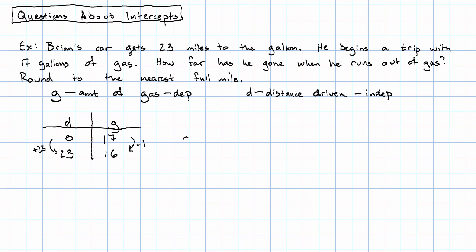The amount of gas that he has left is equal to negative 1/23rd, right, change in g over change in d, times d, plus he started with 17 gallons.